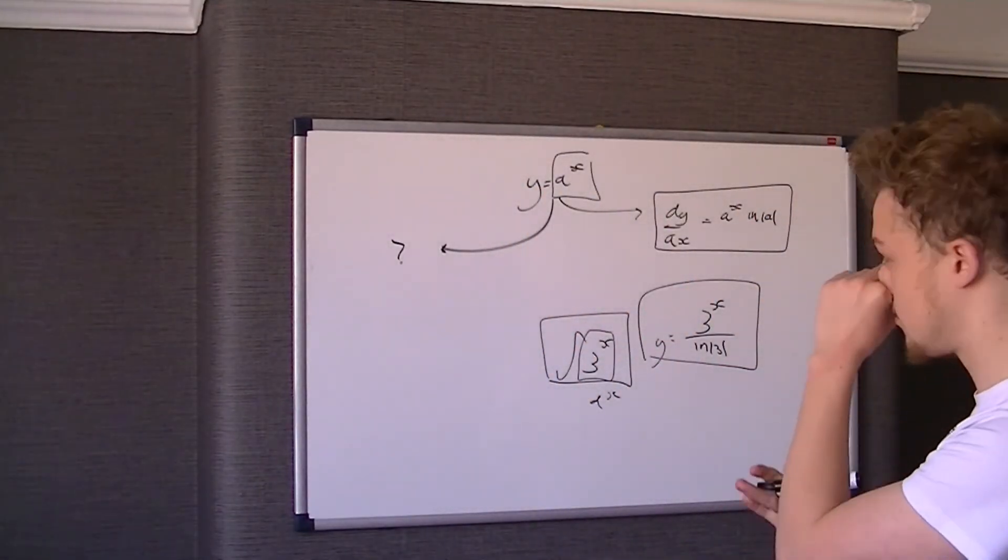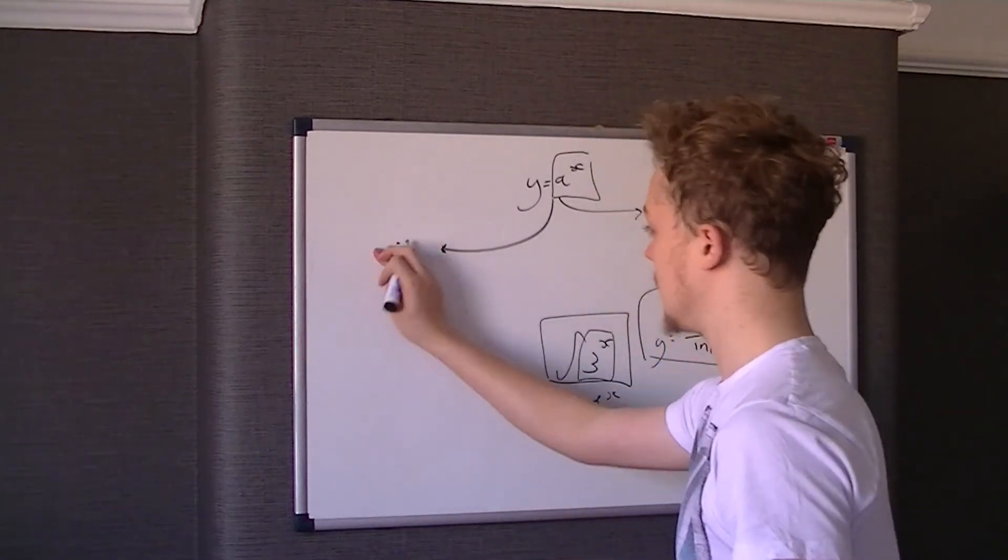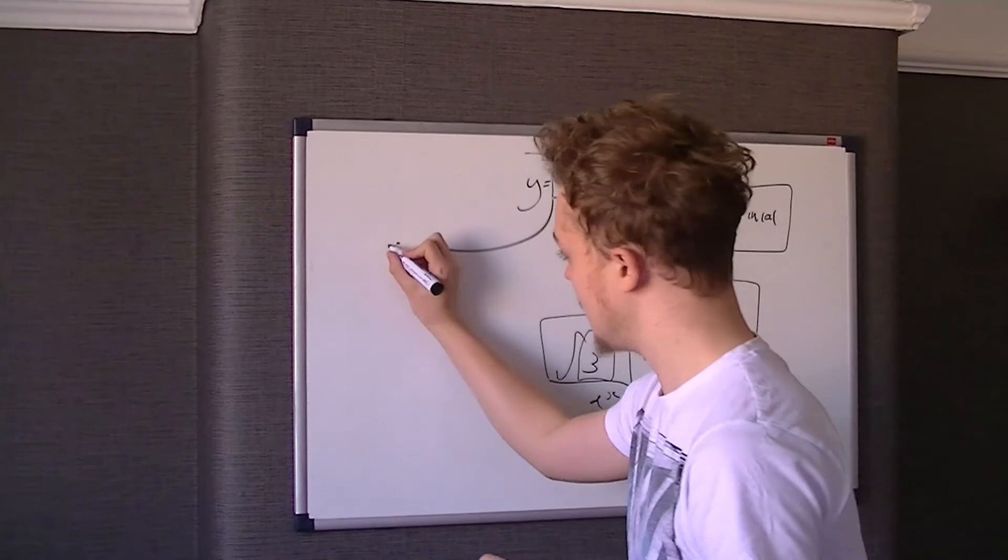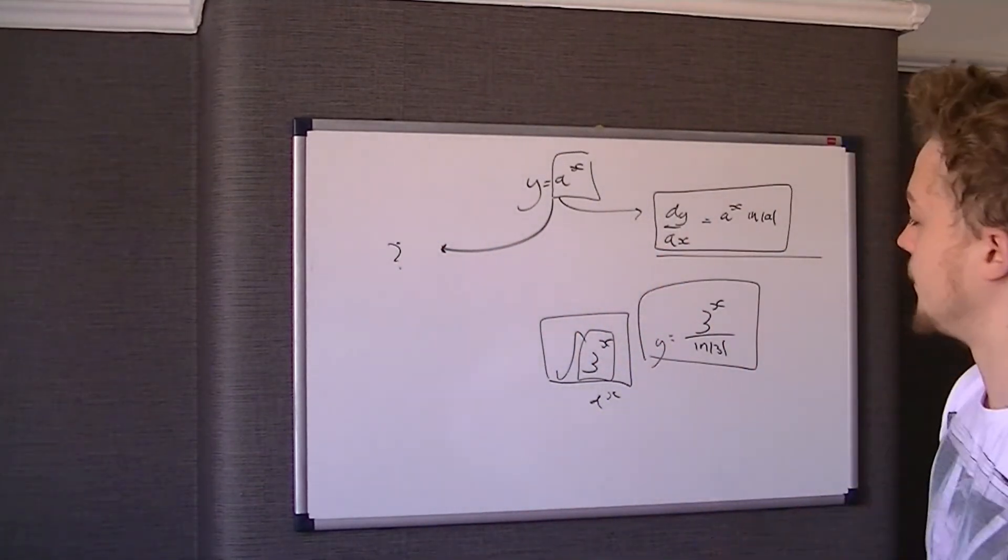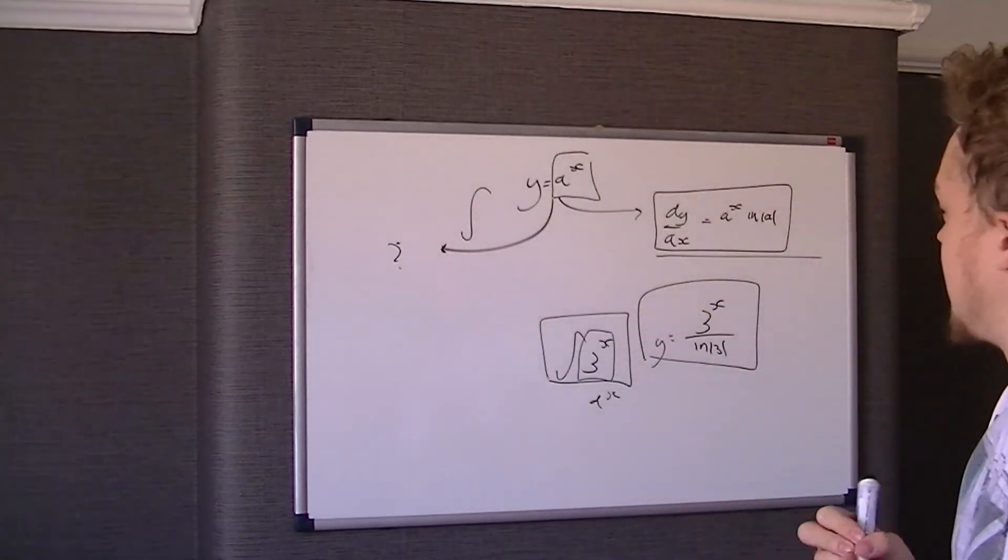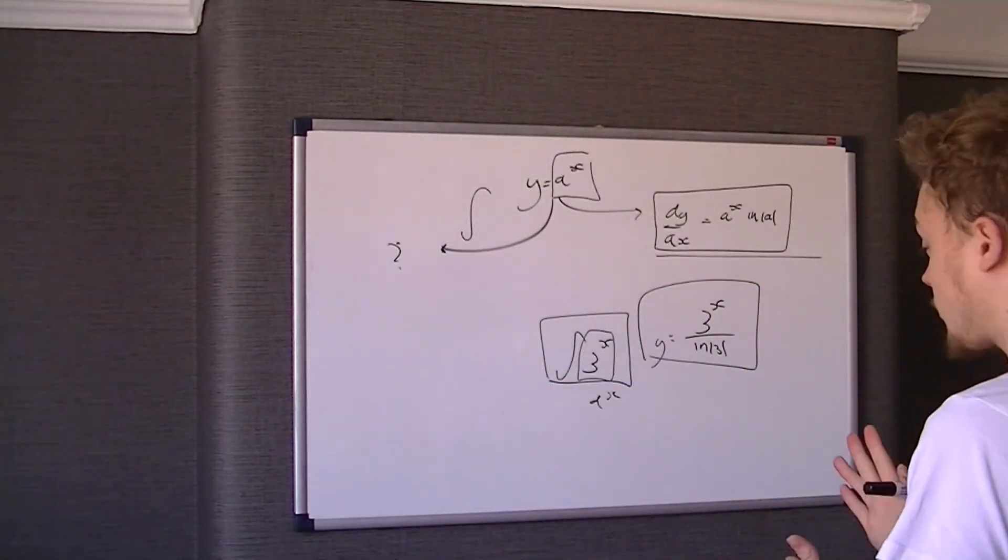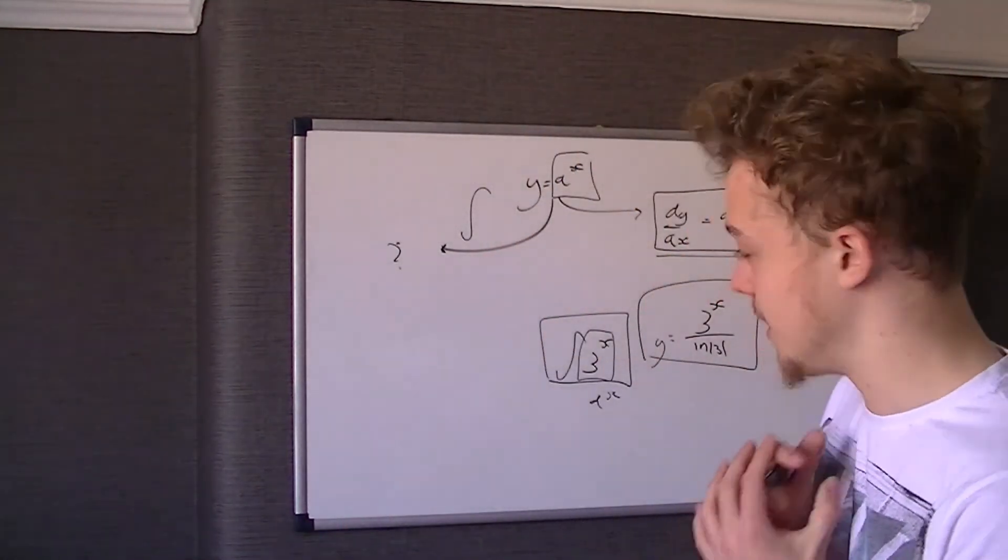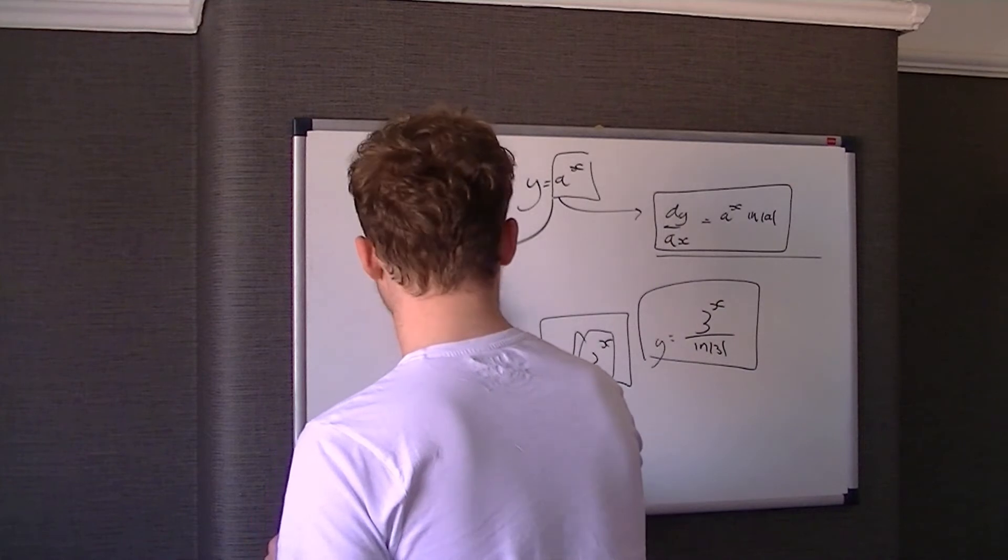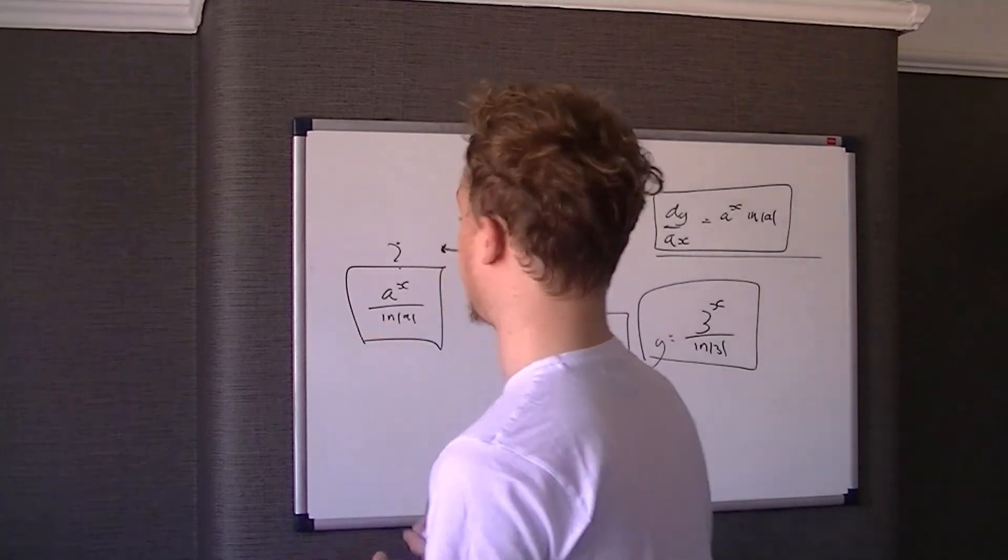So hopefully that's explained how to integrate a to the x. There's no real law for integrating it, but I suppose if you've got y equals a to the x and you've got to integrate that, then it's the same: a to the x over ln a. And that's just a formula that you might need to know.